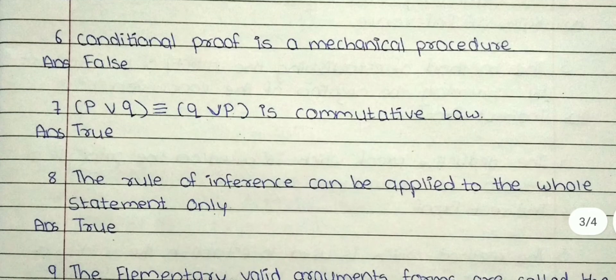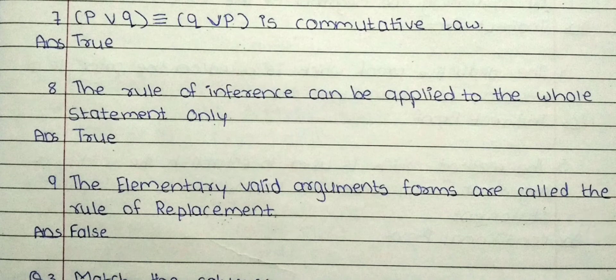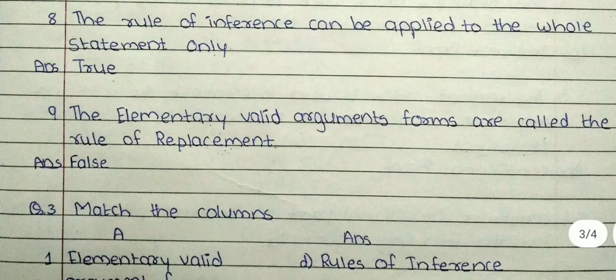Seventh: P dot H dot Q triple bar Q dot H dot P is a commutative law. The answer is true. Eighth: the rule of inference can be applied to the whole statement only. The answer is true. Ninth: the exclamatory valid argument forms are called the rule of replacement. The answer is false.